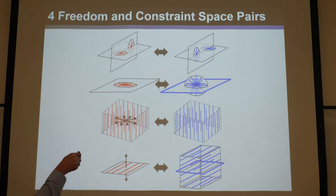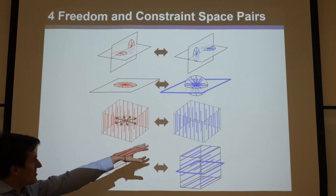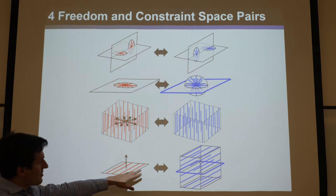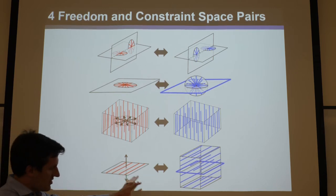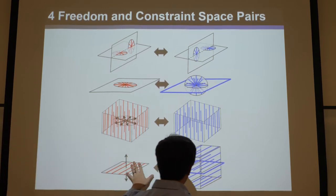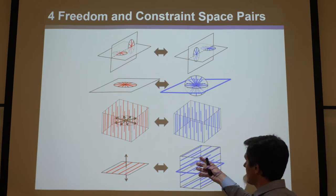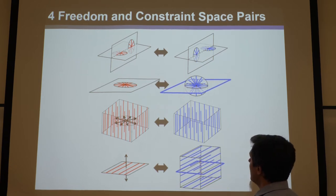This is the first freedom space I introduced, and there's the constraint space. Then we did this freedom space — this disk — and there's its constraint space. We did this freedom space, this constraint space, and this freedom space and this constraint space. We talked a lot about this one — all those last examples. And there are sub-constraint spaces within these as well; you can look them all up in my master's thesis.